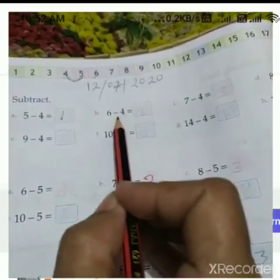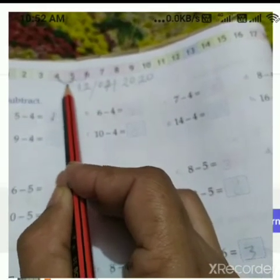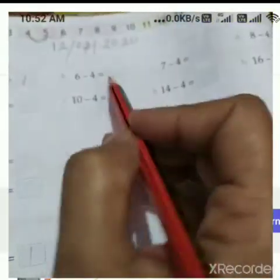Second, 6 minus 4. This is 6. We will go back to 4. One number and 2 numbers. What we get? 2 numbers. We also can on our fingers also.